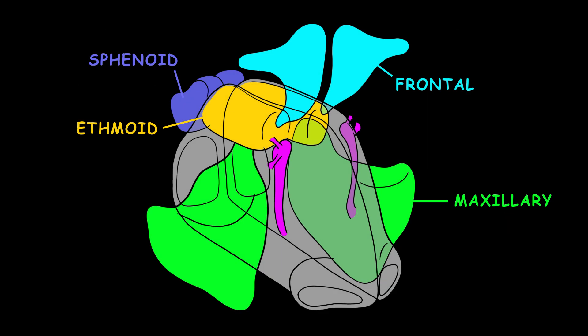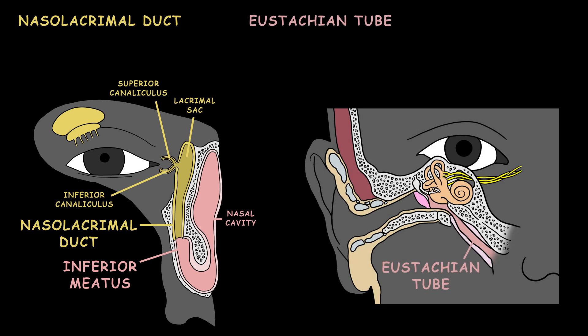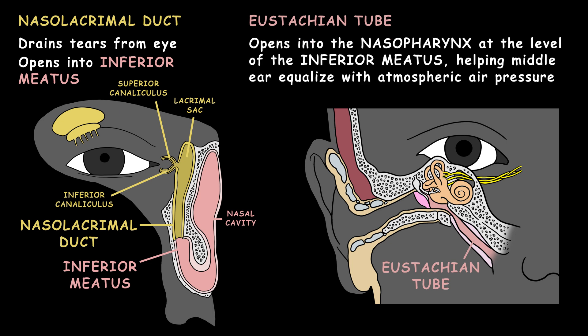As discussed, the paranasal sinuses drain into the nasal cavity. But there are also other structures that open into the nasal cavity: the nasolacrimal duct and the eustachian tube. The nasolacrimal ducts drain tears from the eye, opening into the inferior meatus. The eustachian tube opens into the nasopharynx at the level of the inferior meatus, helping the middle ear equalize with atmospheric air pressure.